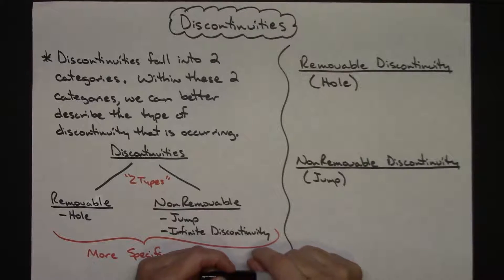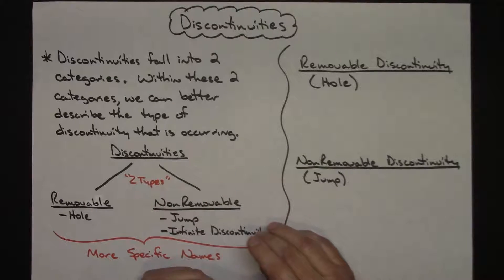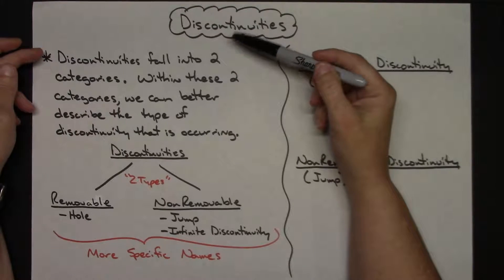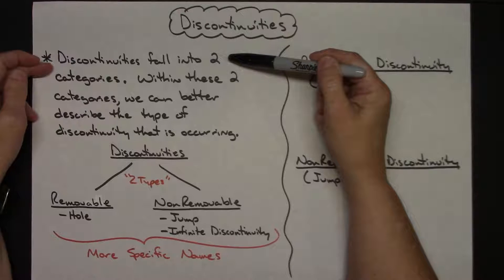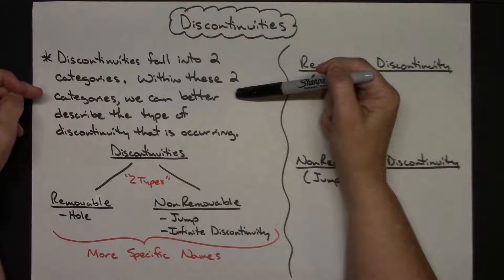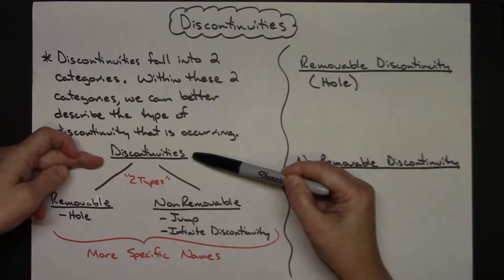Today we're going to take a look at some discontinuities — how you go about naming them and how you go about identifying them. Basically, discontinuities fall into two categories, and within those two categories we can use words that describe the type of discontinuity occurring in a more specific way.